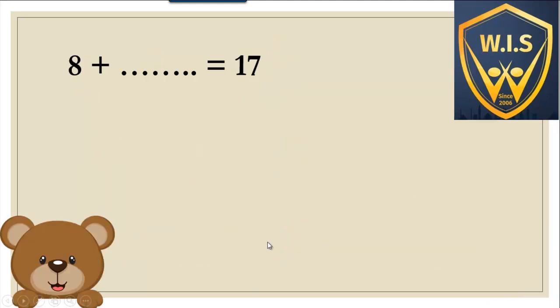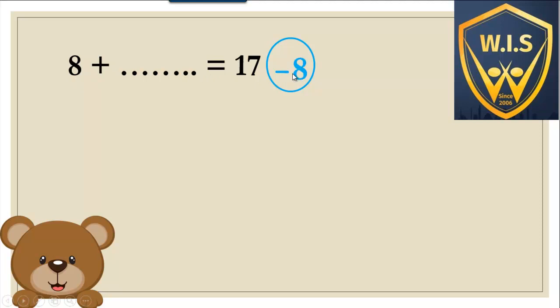Another example: eight plus what equals seventeen. We make a circle and write minus. Seventeen minus eight. Put eight in my mind, close my hand, count after eight: nine, ten, eleven, twelve, thirteen, fourteen, fifteen, sixteen, seventeen. So it's nine.